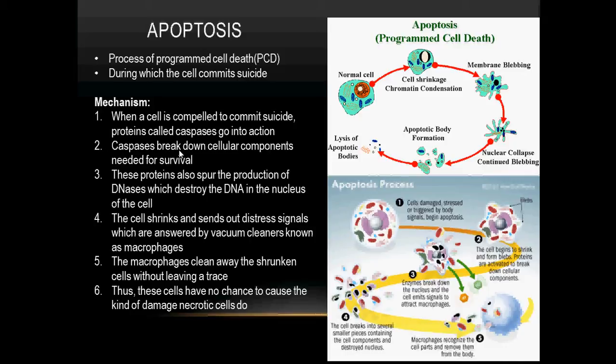These proteins also stimulate the production of DNases that would destroy the DNA residing in the nucleus of a cell. The cell then starts shrinking and sends out distress signals answered by macrophages, which are the vacuum cleaners or sweepers of the body. These macrophages clean away the shrunken cells without leaving a trace, so the cells have no chance to cause any damage as necrotic cells do. This is a clean way of dying.